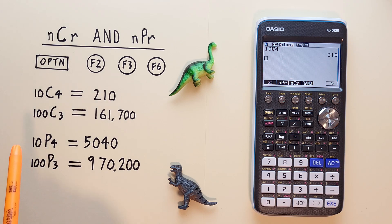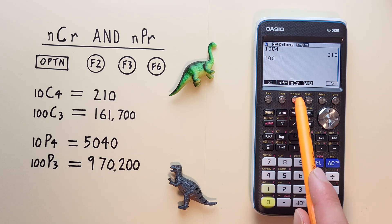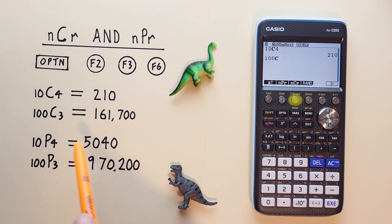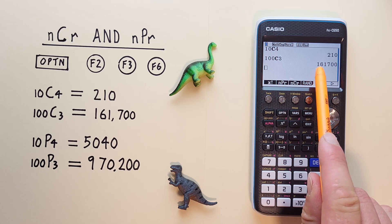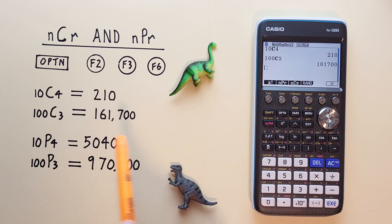Another example, let's choose 3 objects from a set of 100. Again, we start with entering the 100, choose nCr or combinations, and then 3, and hit execute or EXE, and we see we get 161,700 possible combinations.